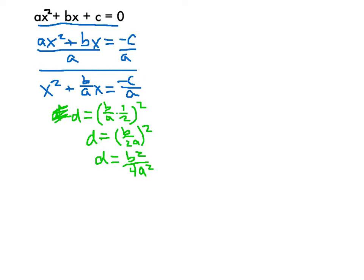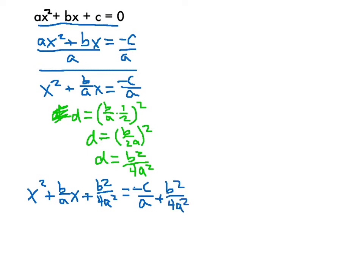That's what I need to add to both sides of this equation. So I'll have x² + (b/a)x + b²/4a². Remember, I need to do the same thing to the other side, so I'll have −c/a + b²/4a². On the left-hand side, that's going to factor. It's going to factor into — before you square that term to get d, that's what we put inside the binomial. So my grouping will be (x + b/2a)².